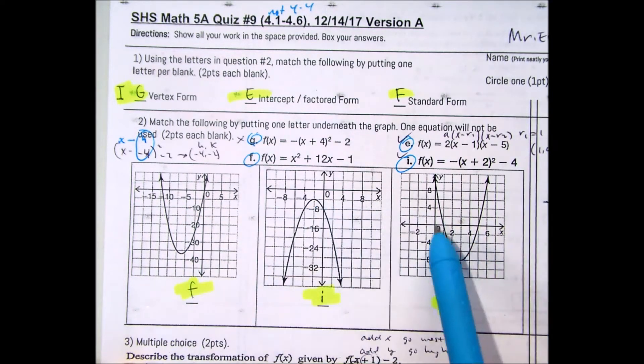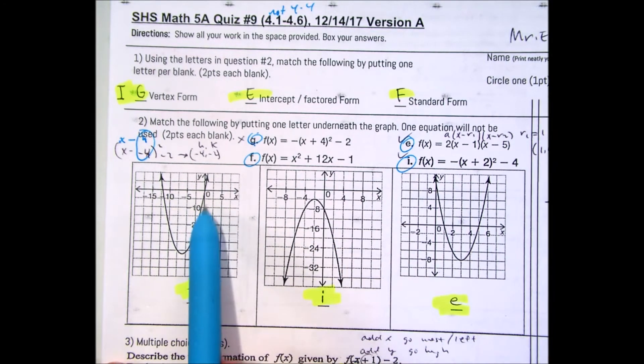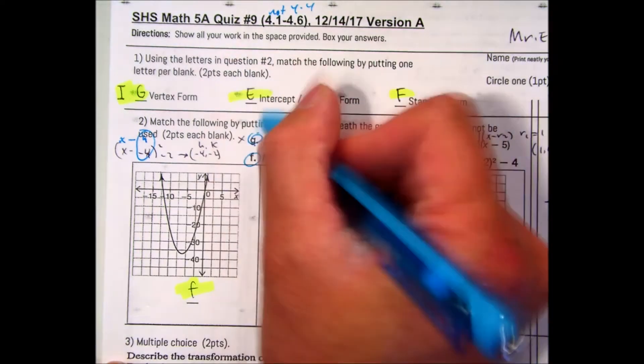That tells you your h value is negative 4 and your k value is negative 2. If I go left 4, not that one. Notice how none of these graphs have left 4 down 2. Now here's the tricky part. Each of the graphs are different in how they count the x axis. For example, this one is counting every 2 is equal to 5. So that means each box is equal to 2.5. Does that make sense? So I'm not going to use G.